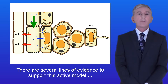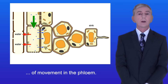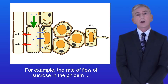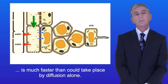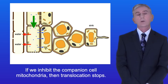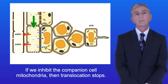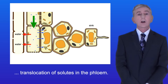There are several lines of evidence to support this active model of movement in the phloem. For example, the rate of flow of sucrose in the phloem is much faster than could take place by diffusion alone. And if we inhibit the companion cell mitochondria then translocation stops. Hopefully now you should be able to describe translocation of solutes in the phloem.